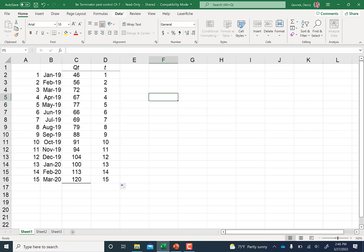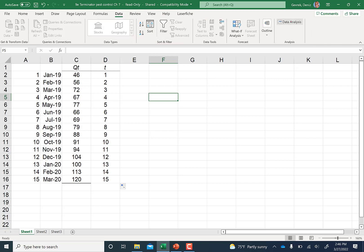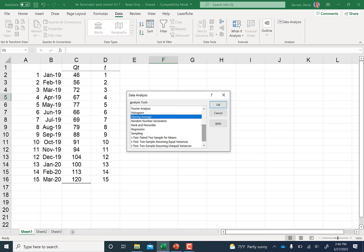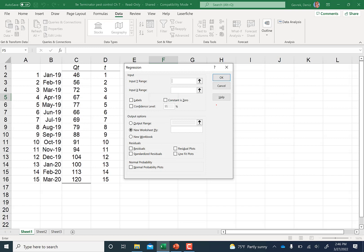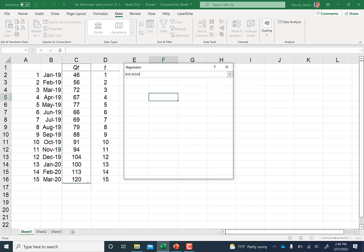I am going to run a regression. Hit Data, Data Analysis. It takes a minute. We're going to pick Regression, then put labels. Y-range is your Qt and X-range is your T.